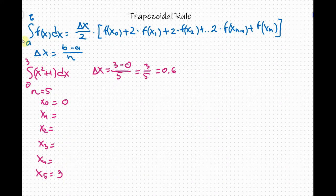So now for x sub 1. For x sub 1 we are going to sum the previous value of x plus delta x. So we have 0 plus 0.6 equals 0.6. So for x sub 2 we will sum x sub 1 plus delta x or 0.6 plus 0.6 equals 1.2.